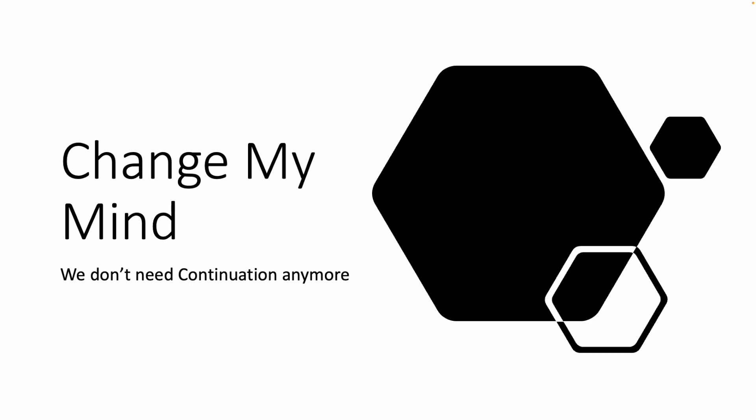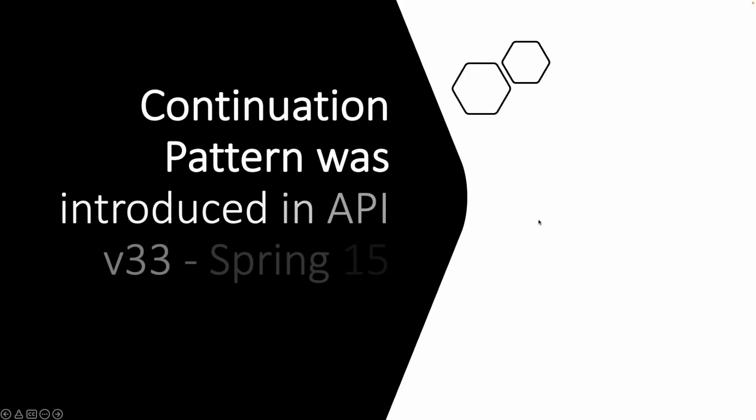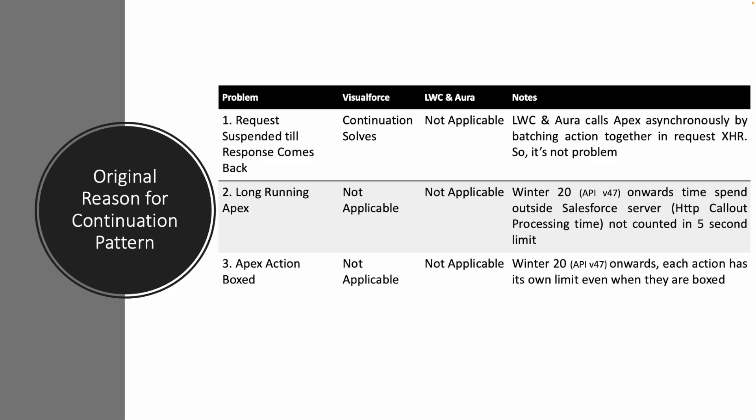In this video I'm trying to make a point that we don't need continuation anymore. The continuation pattern was introduced in API version 33, which was Spring 15 — almost 7-8 years ago. At that time there was definitely a need for continuation, and it did solve a lot of problems we had in the Visualforce page. Now, fast forward seven years later, I'm trying to see if that's still applicable.